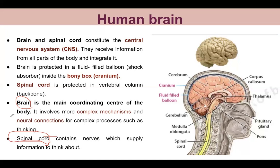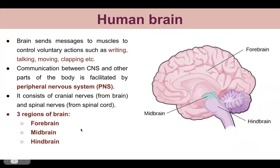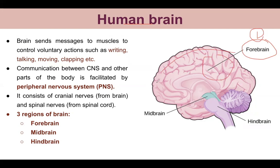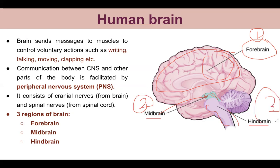When we look inside the human brain, we find three regions. The first and major region is the forebrain - looking at this diagram, the large part here is the forebrain. The smaller part is the midbrain, and this part here is the hindbrain. So the brain is divided into three regions: forebrain, midbrain, and hindbrain.